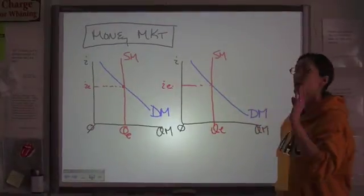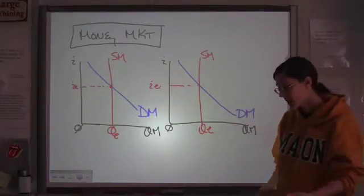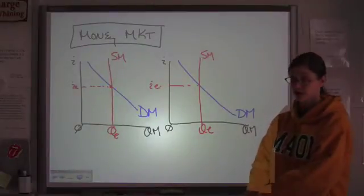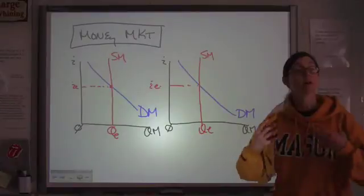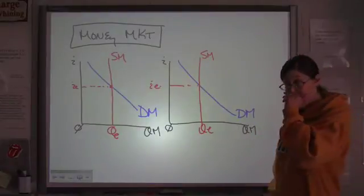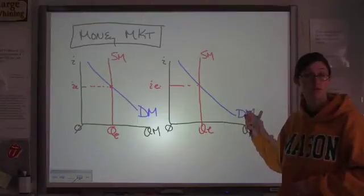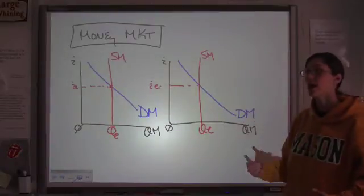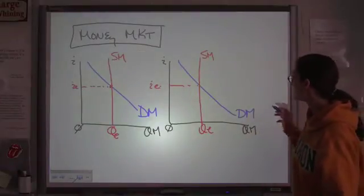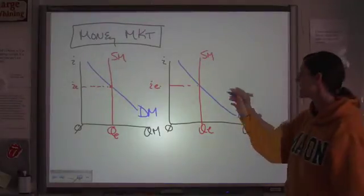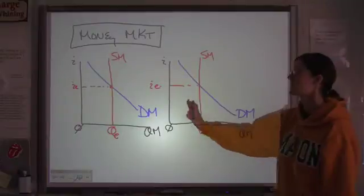If we have some incentive for people to want more money — say, for example, the federal government offers a nice big tax credit to first-time homebuyers, which they did, and millions of people went out and bought their first home — what that does, in effect, is increase demand for money. If people are borrowing money to spend it on a mortgage, that's transactions demand. We represent this as an increase in demand for money. Remember, you're not moving up and down — you're shifting right or left. An increase is to the right, away from zero; a decrease is to the left, toward zero.